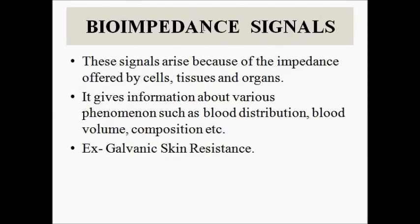Then we have the bio-impedance signals. It is essentially the resistance to electrical conduction offered by the various body parts — the cells, tissues, and organs. The main source of bio-impedance signal is the skin, the various layers of the human skin, which is called galvanic skin resistance. The bio-impedance signal gives us information of diagnostic significance about the distribution of blood, the volume of blood, and the composition of blood in various body parts.